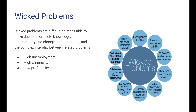Some problems are worse than other problems, and one of the worst kinds is the wicked problem. These are problems that are difficult or impossible to solve due to incomplete knowledge, changing requirements over time, contradictions in those requirements, and complex interplay between solving problems. They don't have any final solution — you can go on forever trying to improve but never completely solve them, and it's often difficult to tell when you have solved them. Some societal examples are high unemployment and high criminality, which persist in almost all societies and no one really knows how to completely solve them.